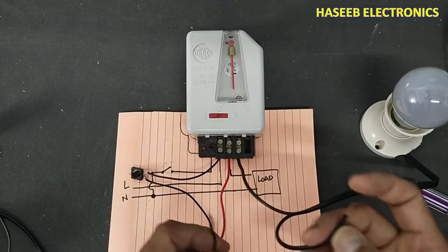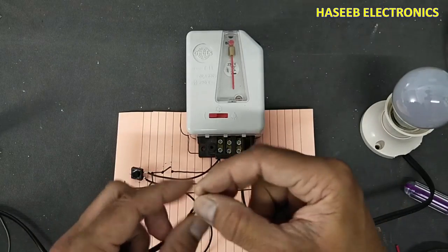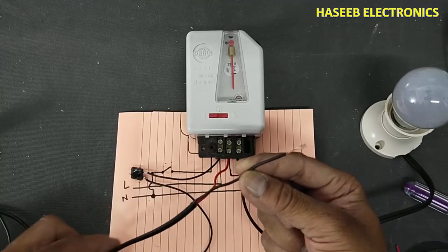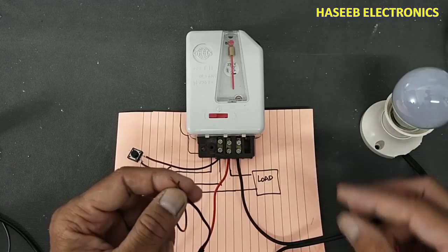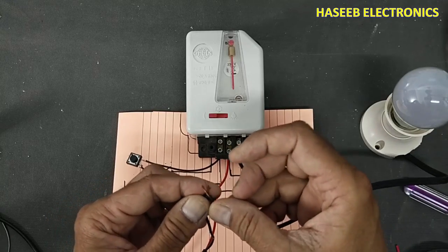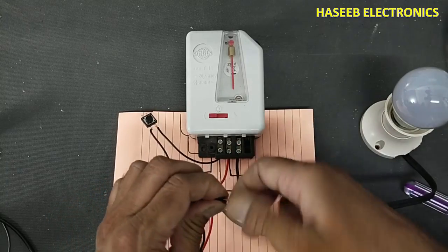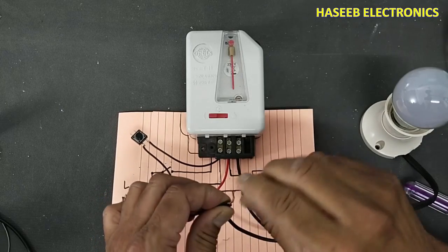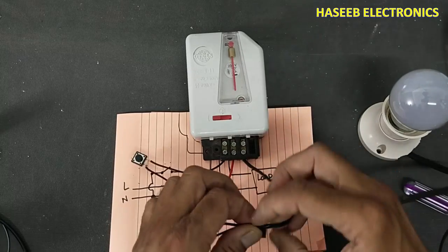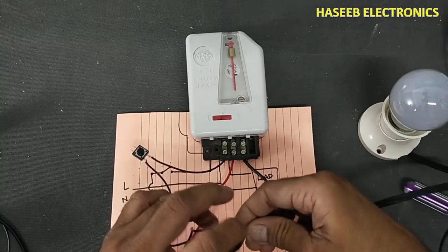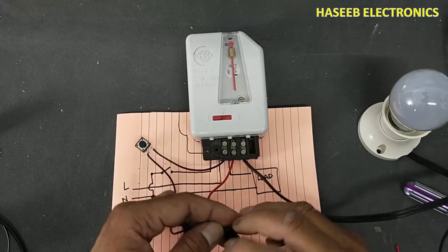Now we have three wires: one that is coming from the neutral from the line supply, one wire from the switch, and one wire from the lamp. We will join together. Insulate it. Our connections are ready.